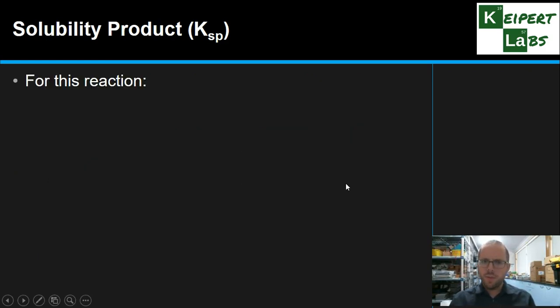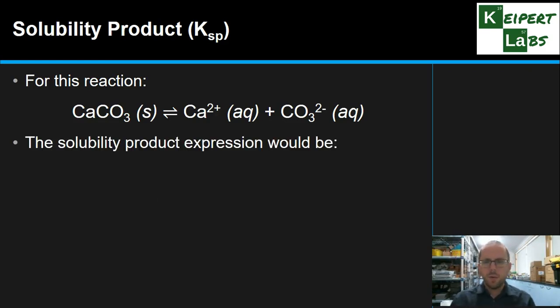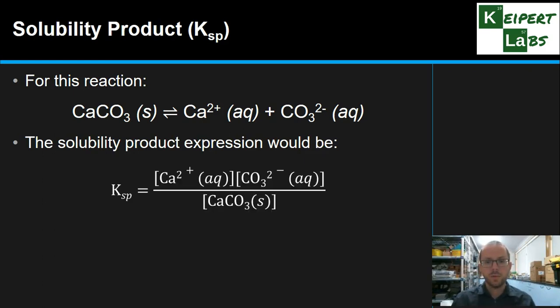Then saying, if we talk about this reaction, how would we write the Ksp expression? If we start with the conventional way we would do it, products over reactants equals K, then we get this sort of arrangement. We get the calcium and the carbonate concentrations as our products, and our calcium carbonate solid on the bottom.